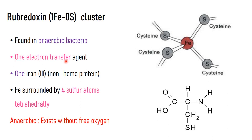Rubredoxin is a one-electron transfer agent — note that it transfers only one electron at a time. Initially, iron is in the +3 oxidation state, which we call the oxidized form. Only one iron is present and there is no heme group, so it is a non-heme protein. The iron is surrounded by four sulfur atoms sourced from cysteine amino acids in the surrounding protein. The thiol group of cysteine is attached to Fe, and these are arranged in a tetrahedral manner.